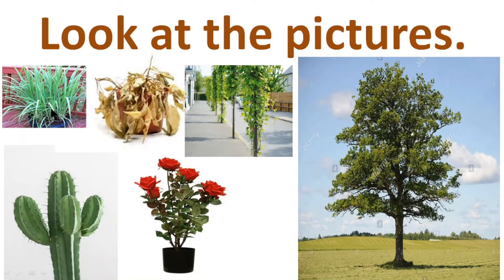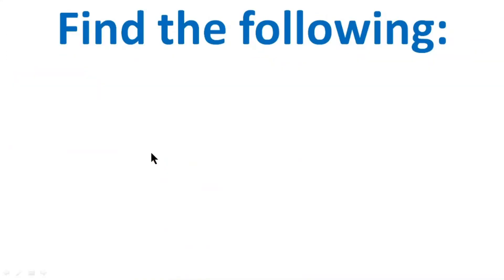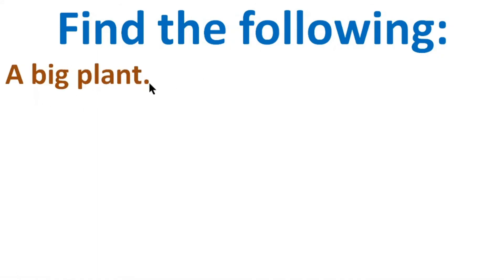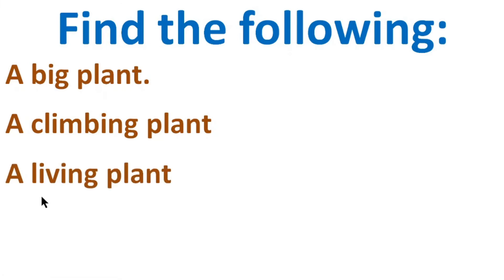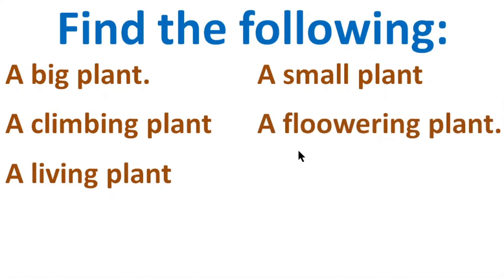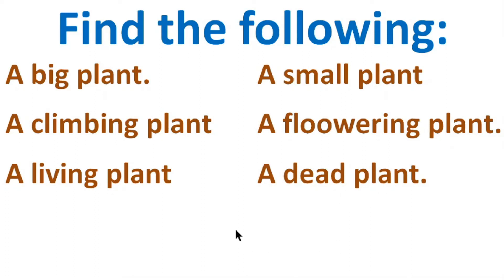In this picture we can see some types of plants, some kinds of plants. Now we will find the following: a big plant, a climbing plant, a living plant, a small plant, a flowering plant, and a dead plant. So now we will find out all these types of plants.